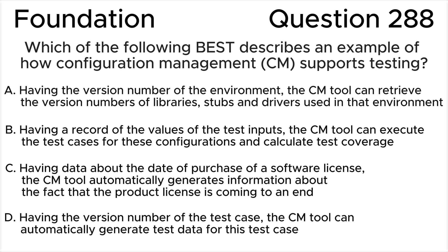B: Having a record of the values of the test inputs, their configuration management tool can execute the test cases for these configurations and calculate test coverage. C: Having data about the date of purchase of a software license, their configuration management tool automatically generates information about the fact that the product license is coming to an end. D: Having the version number of the test case, the configuration management tool can automatically generate this data for this test case.